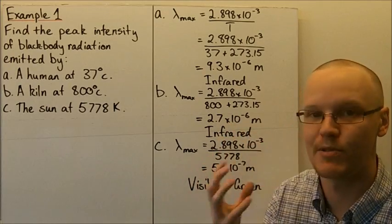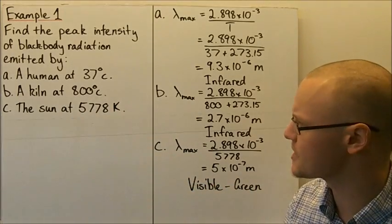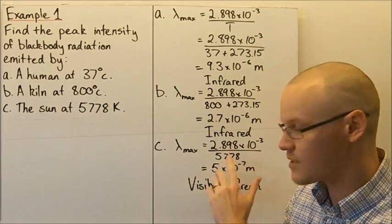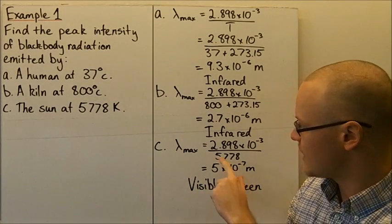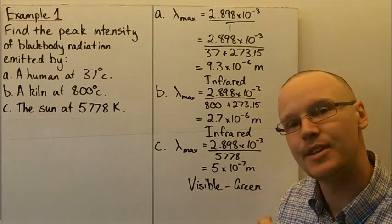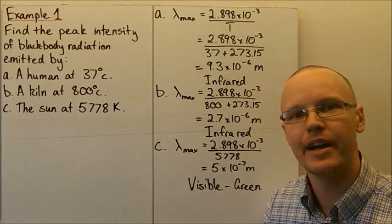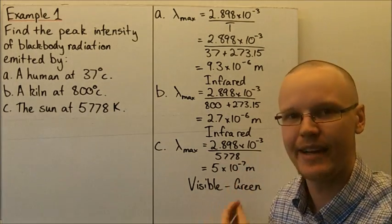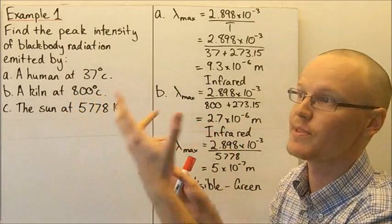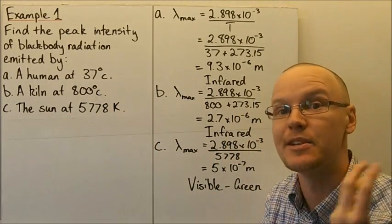If the kiln got even hotter, it would glow redder as it pushed further into the red part of the visible spectrum. Looking at the sun at 5,778 Kelvin — no need to convert, it's already in Kelvin — we can see that the lambda max for our sun is actually in the visible spectrum, with the peak in the green part of the spectrum. But we look at the sun and it's not green, because radiation is still emitted across all visible colours, which is why the sun appears white to us.